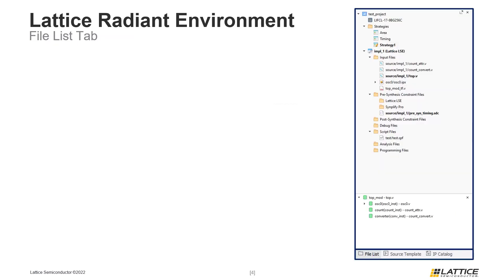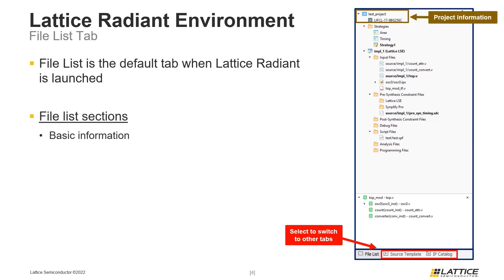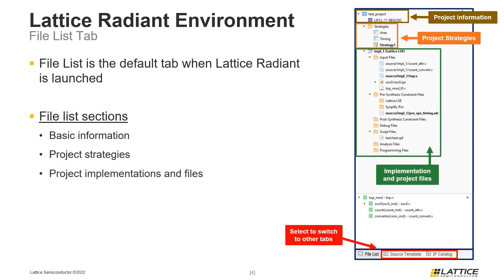The first thing we are going to discuss are Lattice Radiant's project tabs. When a project is opened in Radiant, the default project tab will be File List. The other two tabs — Source Template and IP Catalog — can be accessed by clicking the tab at the bottom of the window. The project tab that is currently active will have its background grayed out. The File List tab is divided into four different sections: basic project information, project strategies, project implementations, and project files, along with a hierarchical top-down view of the modules in a project.